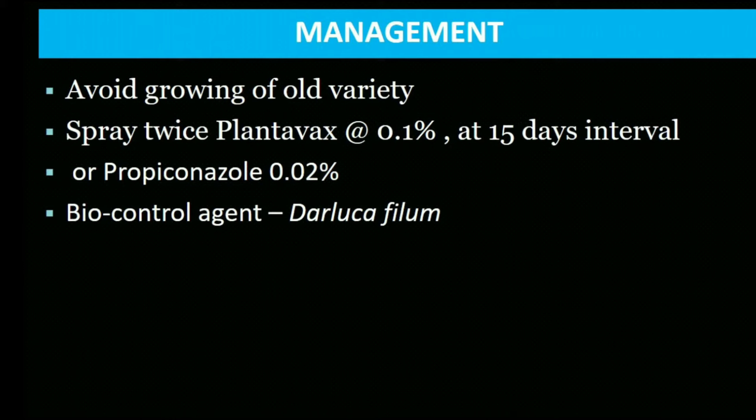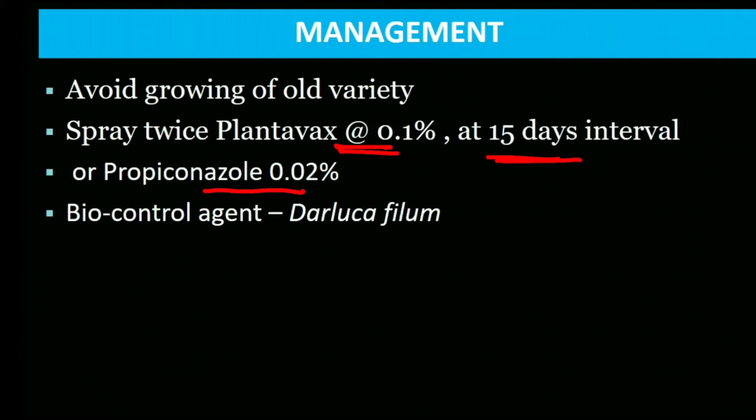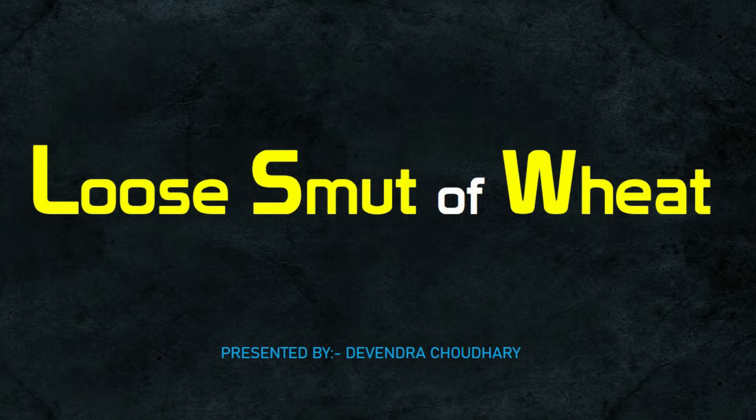Chemical spray: Plantavax 0.1% and Propiconazole 0.02% at 15-day intervals for rust management. Use bio-control agent Darluca filum — this fungus controls Puccinia and should be used as a biocontrol agent.